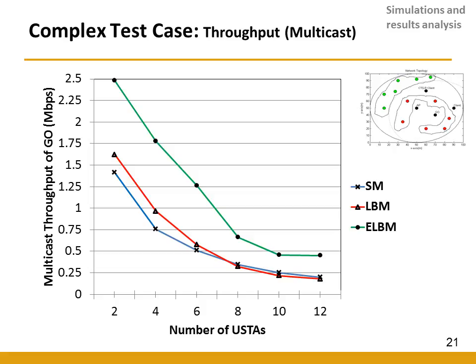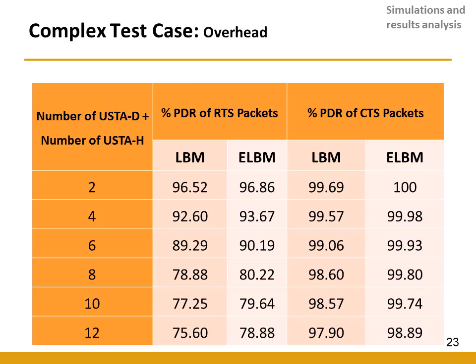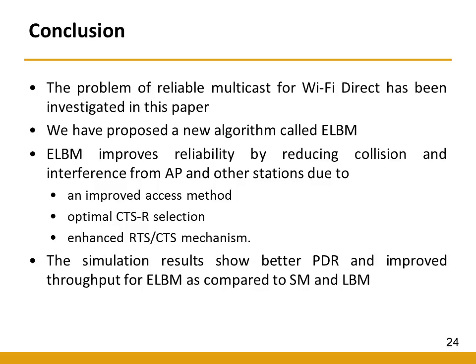The gain in ELBM performance is due to its three features. Regarding effects on unicast stations, average unicast throughput is slightly lower for ELBM initially but increases compared to SM as unicast stations grow, while ELBM always outperforms LBM. ELBM also improves overhead PDR compared to LBM due to the enhanced RTS-CTS mechanism. In conclusion, this paper investigated reliable multicast for Wi-Fi Direct networks, and the simulation results show better PDR and improved throughput for ELBM compared to other protocols.